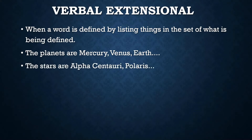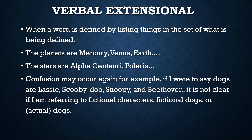But if you tried to do that with stars, obviously you would fail — stars are Alpha Centauri, Polaris, the Sun — you cannot continue providing a complete list. So you just give a set of examples. Confusion might also occur: if I say dogs are Lassie, Scooby-Doo, Snoopy, Beethoven, it's not clear if I'm referring to fictional characters only, or maybe actual dogs named with those same names. So it can be confusing when you're just listing words.